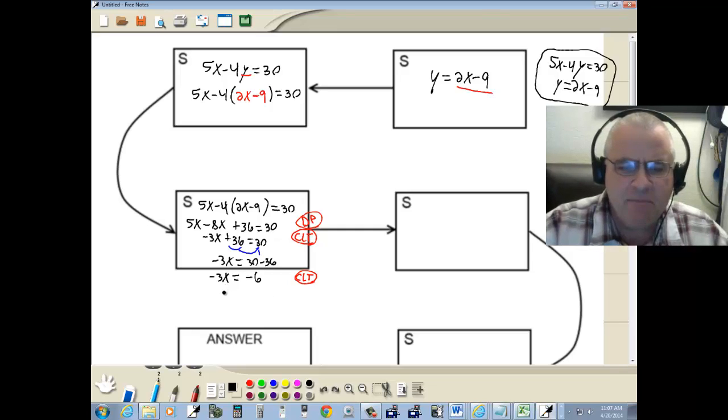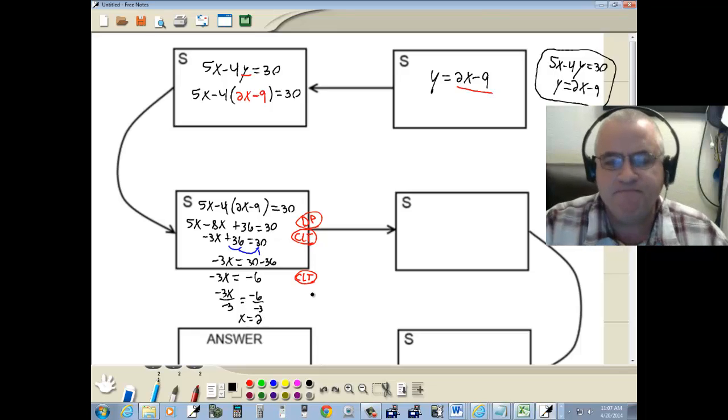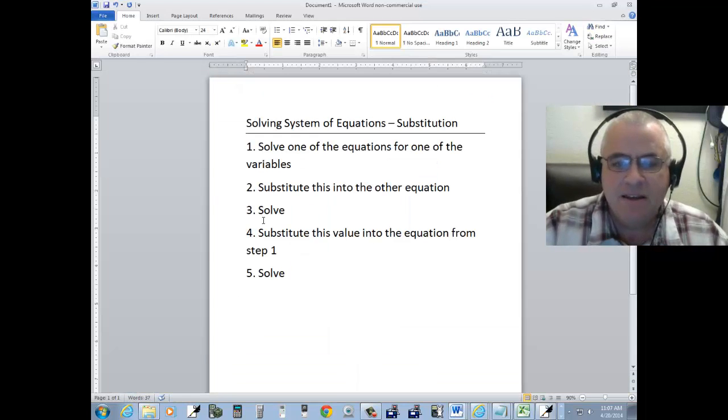Then our last step is to divide both sides by the number of our x, which is a negative 3. And we get x is equal to 2. Okay, that was step 3.